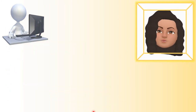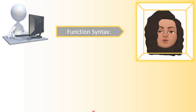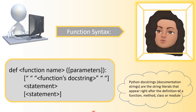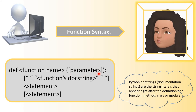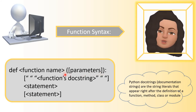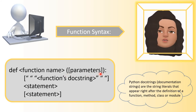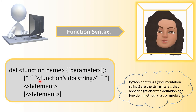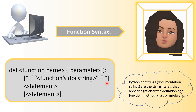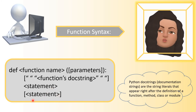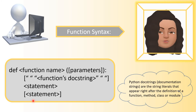Looking at the function syntax: it starts with keyword 'def', then the function name within angle brackets must be provided by the programmer, then an opening parenthesis written as-is, then parameters within square brackets meaning they are optional, then closing parenthesis and colon. The next optional line is function doc strings - documentation strings which are optional since they're in square brackets. The statement in angle brackets must be provided by the programmer; a second statement in square brackets means more than one statement is optional.